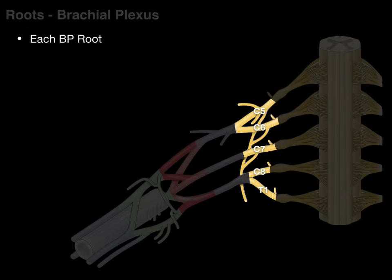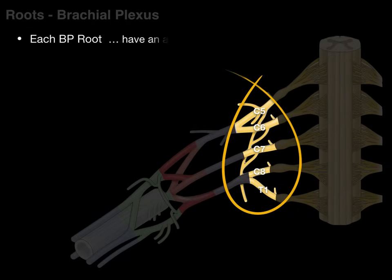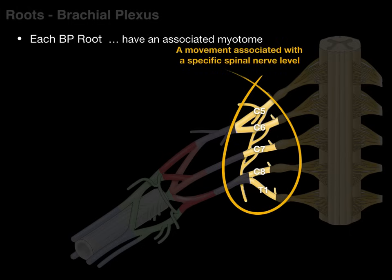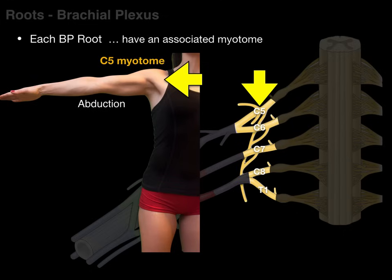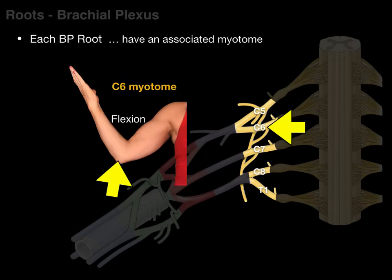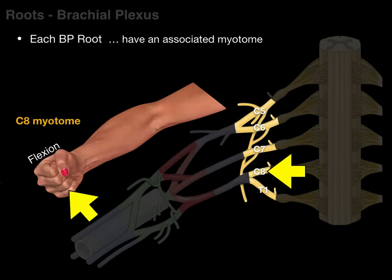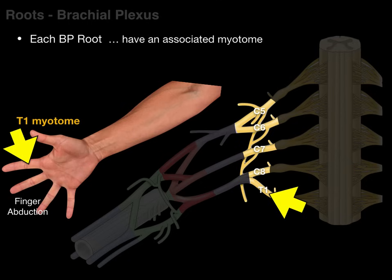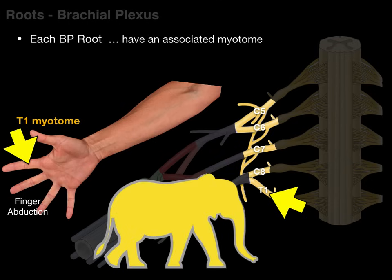Another thing to remember: each brachial plexus root has an associated myotome — a movement associated with a specific spinal nerve level. The C5 root is associated with abduction of the shoulder. C6 root with flexion of the elbow. C7 root with extension of the elbow. C8 root with finger flexion. T1 root with finger abduction. Motor neurons from each brachial plexus root course to an associated upper limb myotome with an associated movement.